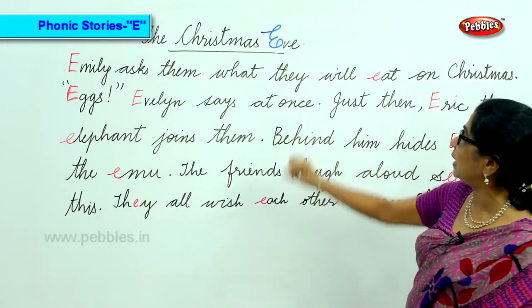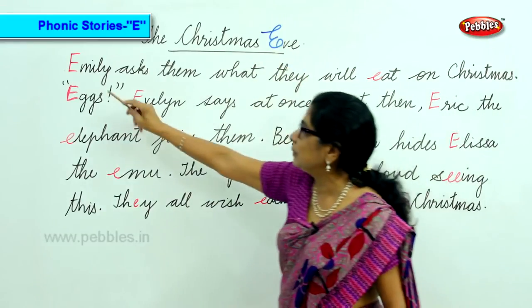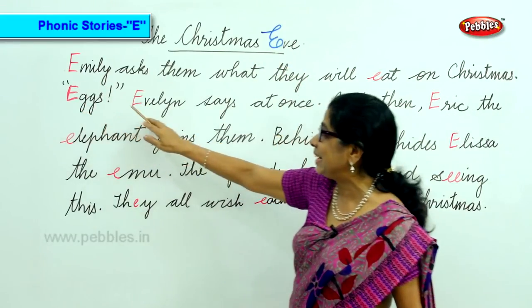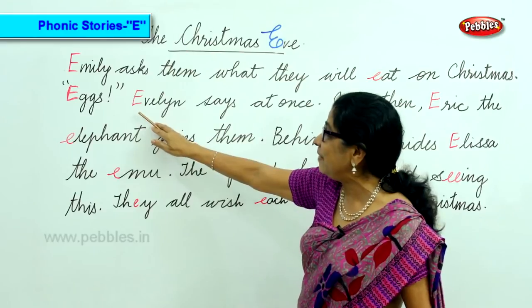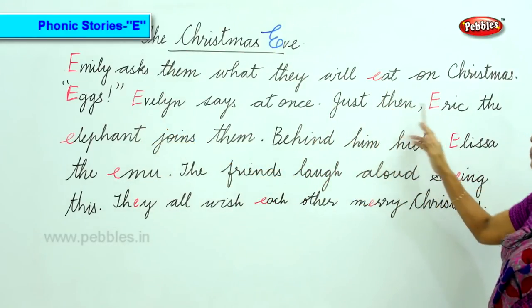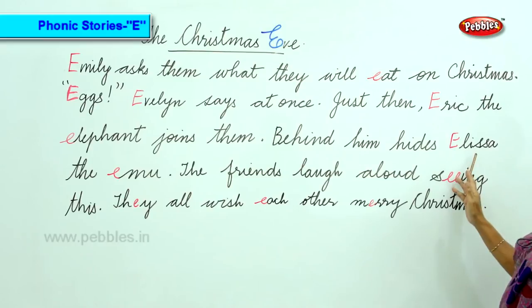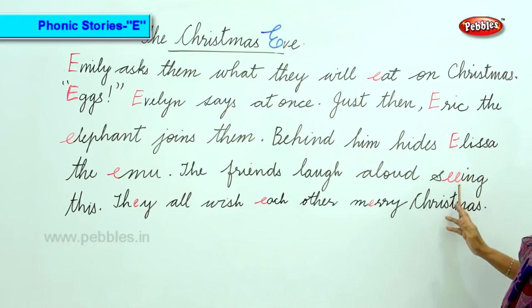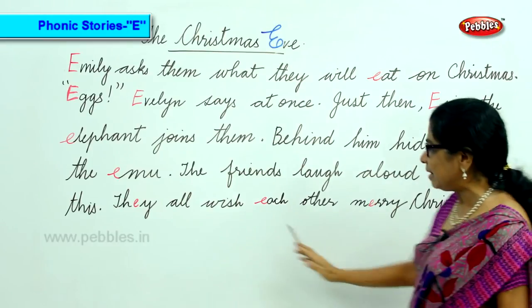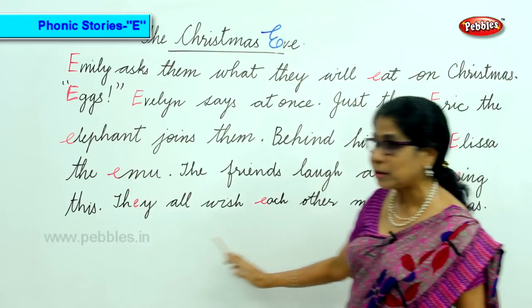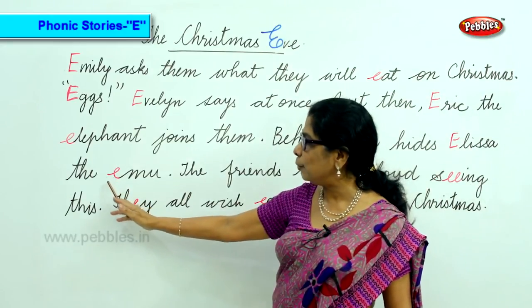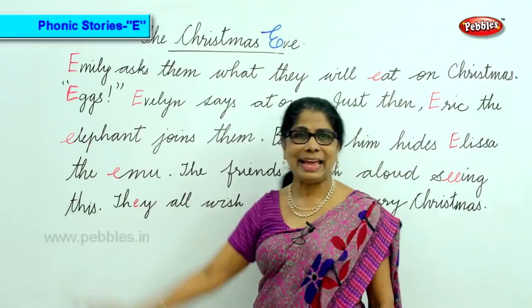Words with the E sound from the story: Eve, Emily, eggs, Evelyn, eat, Eric, Elsa, seeing, merry, each, they, emu, elephant.